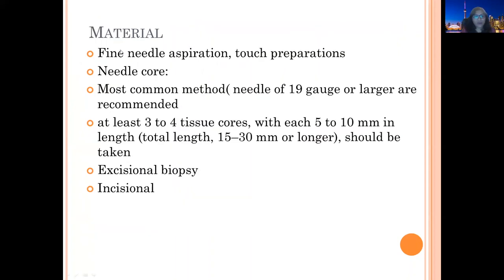For the workup, material can be obtained by different methods: fine needle aspiration, touch preps, or needle core biopsy, which can be done directly or under imaging guidance. The most commonly used needle is 19 gauge or larger. For adequate tissue, we need at least 3 or 4 non-fragmented tissue cores, each at least 5 to 10 mm in length, totaling 15 to 30 mm of non-fragmented tissue for lymphoma workup. Excisional biopsy is also an option. Needle core biopsy is one of the most preferred methods.